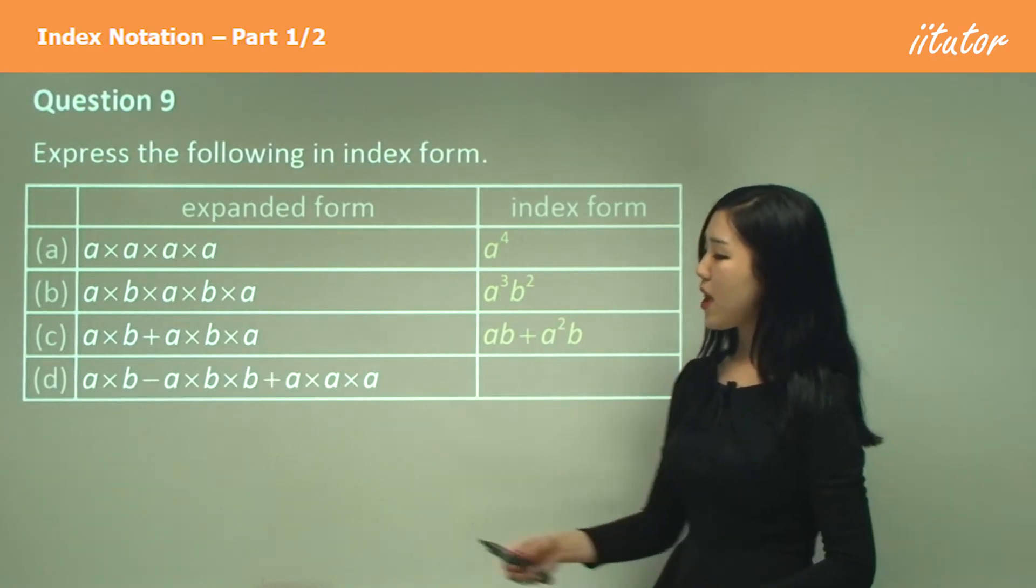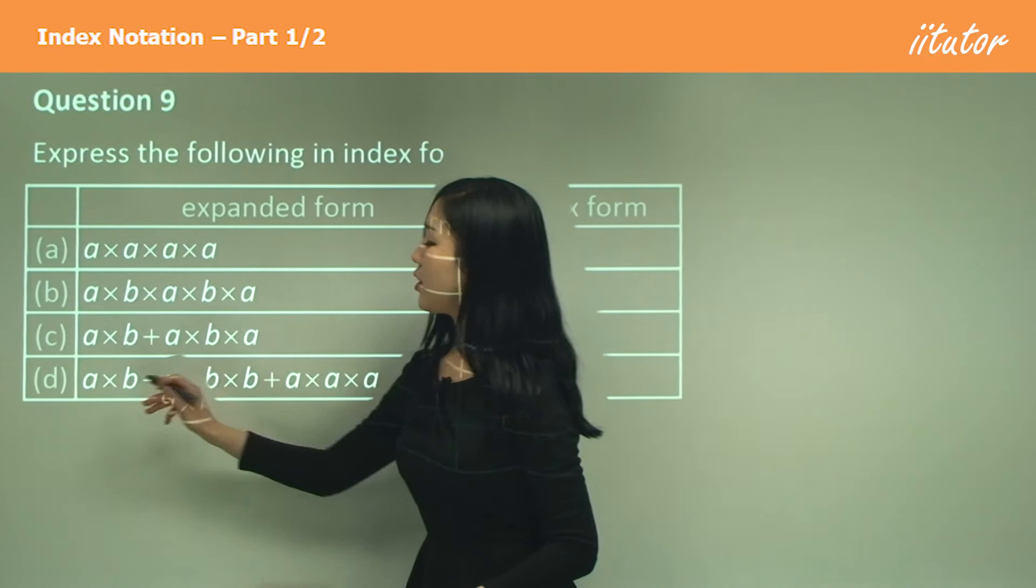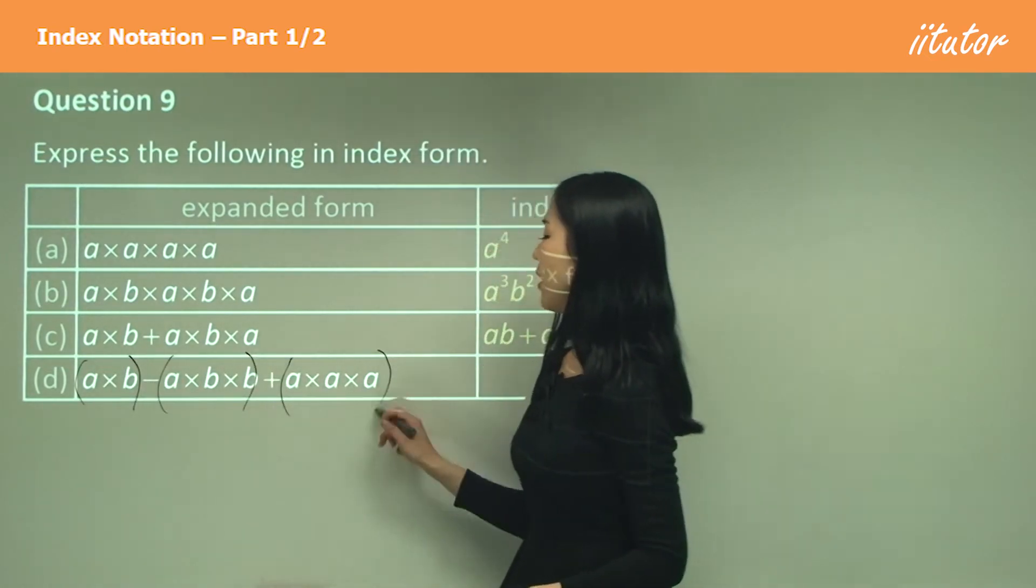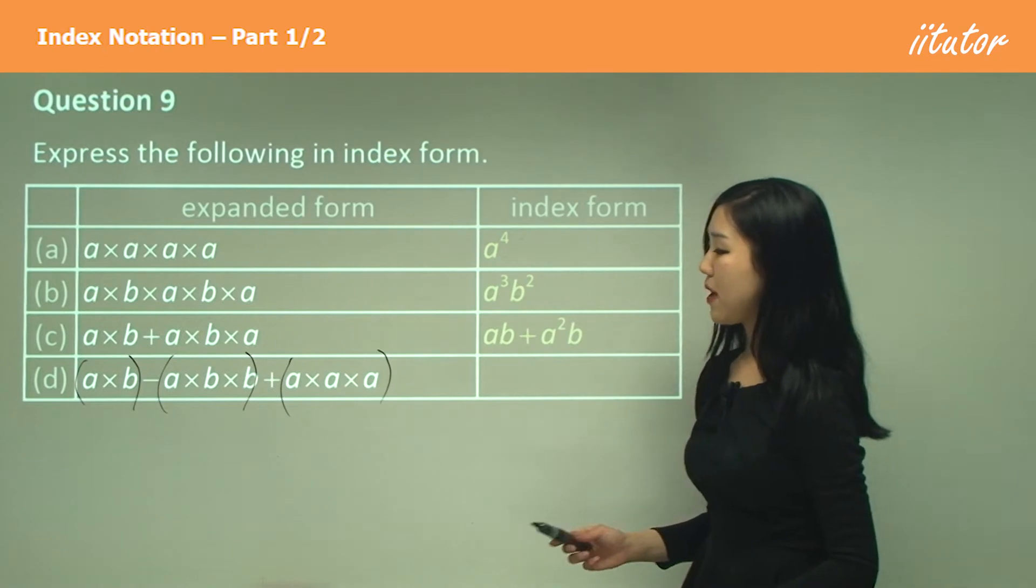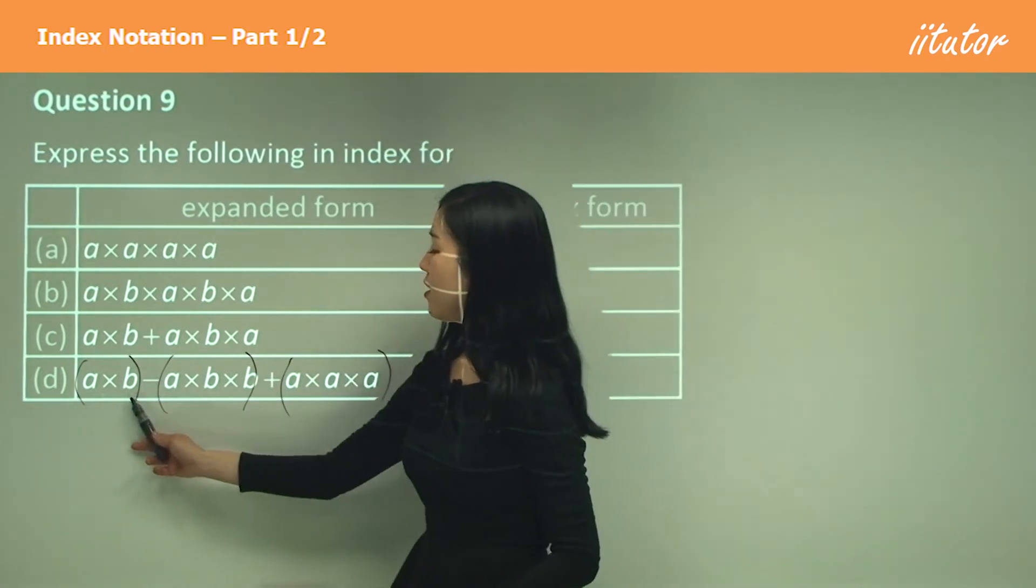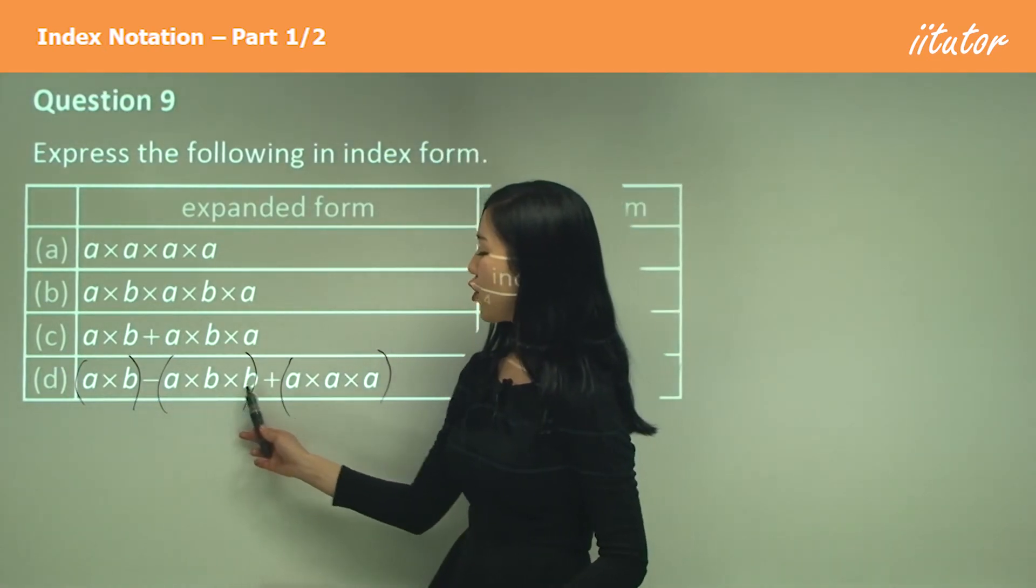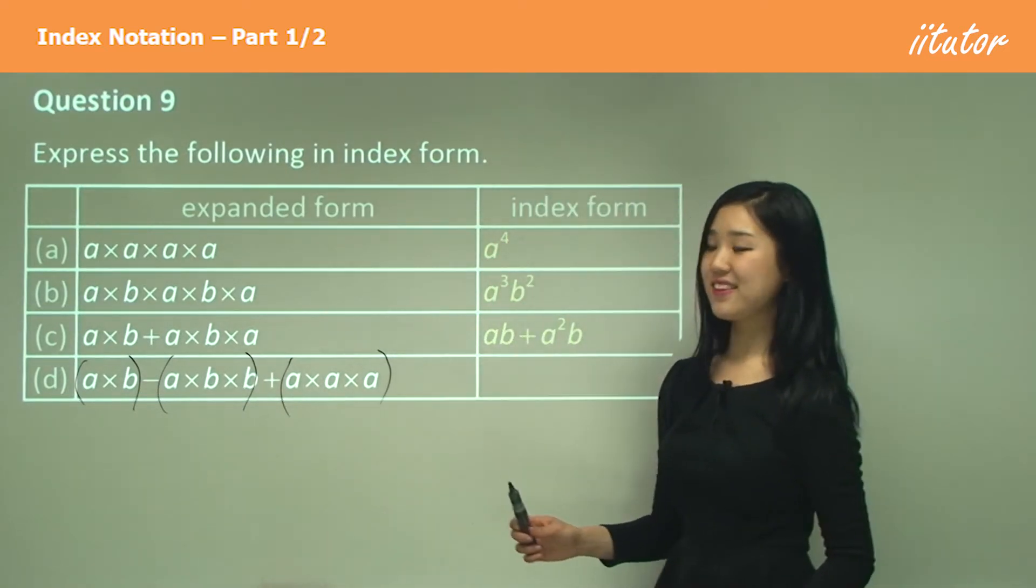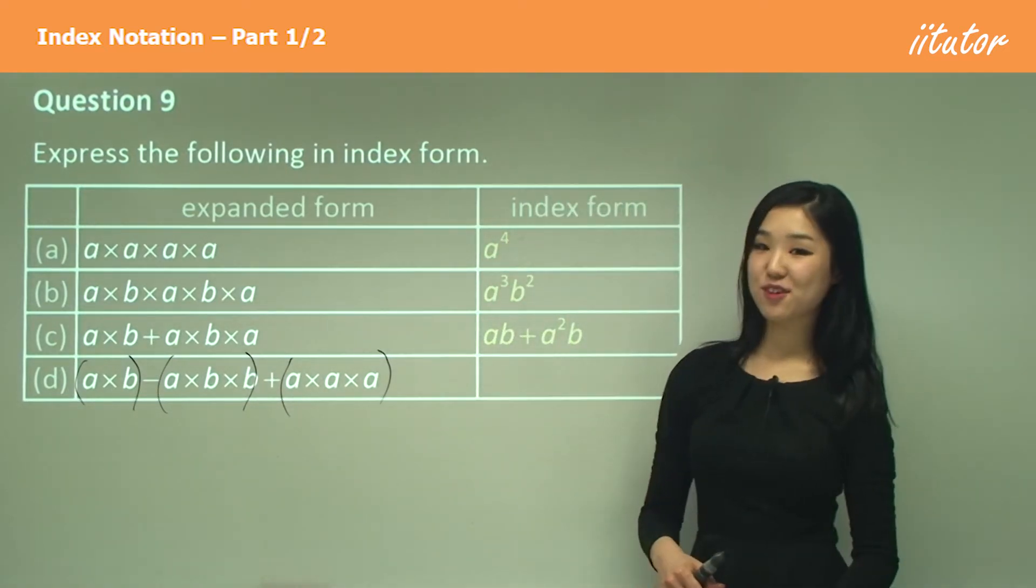Now d. So we have minus and a plus. So all you need to try to simplify are the parts we're multiplying. So with a times b, we've got one a, one b. Here we've got one a and two b's. And here we've got three a's. So how do we write it? Do you guys want to try?